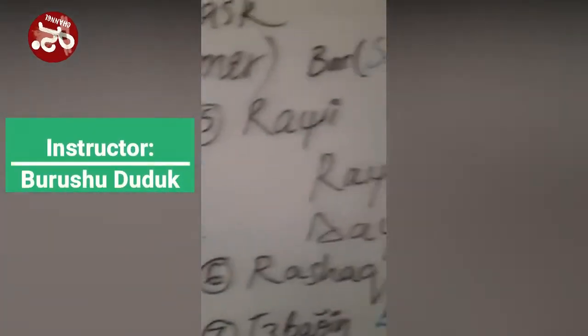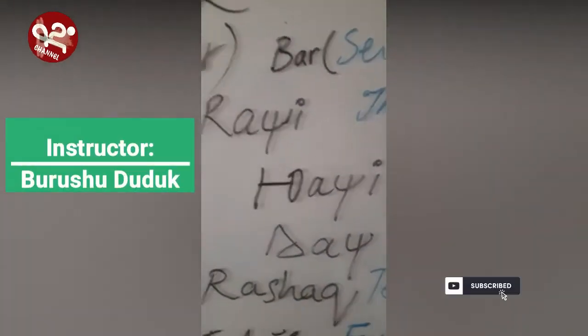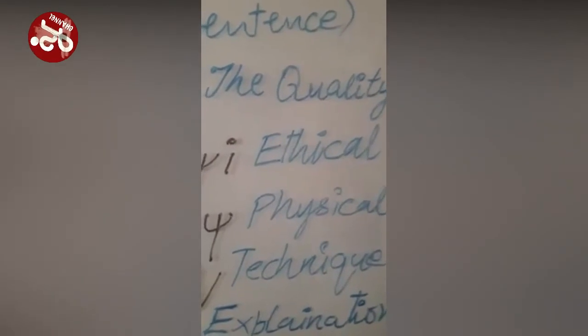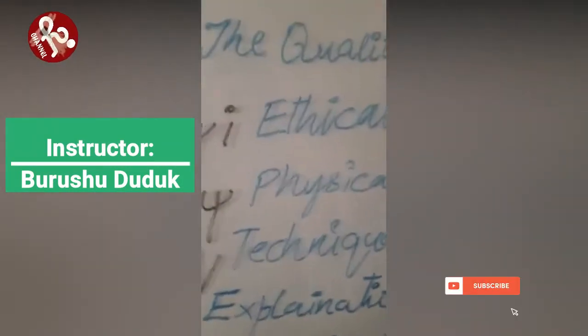The fifth element is 'Rachi.' Rachi means a quality or a quality of perfection that a person acquires. Rachi has two parts: Chachi and Dach. Chachi is the ethical quality — any ethical quality like good, bad, kind, virtuous, honest, charming, or any spiritual, ethical, or moral quality is called Chachi.